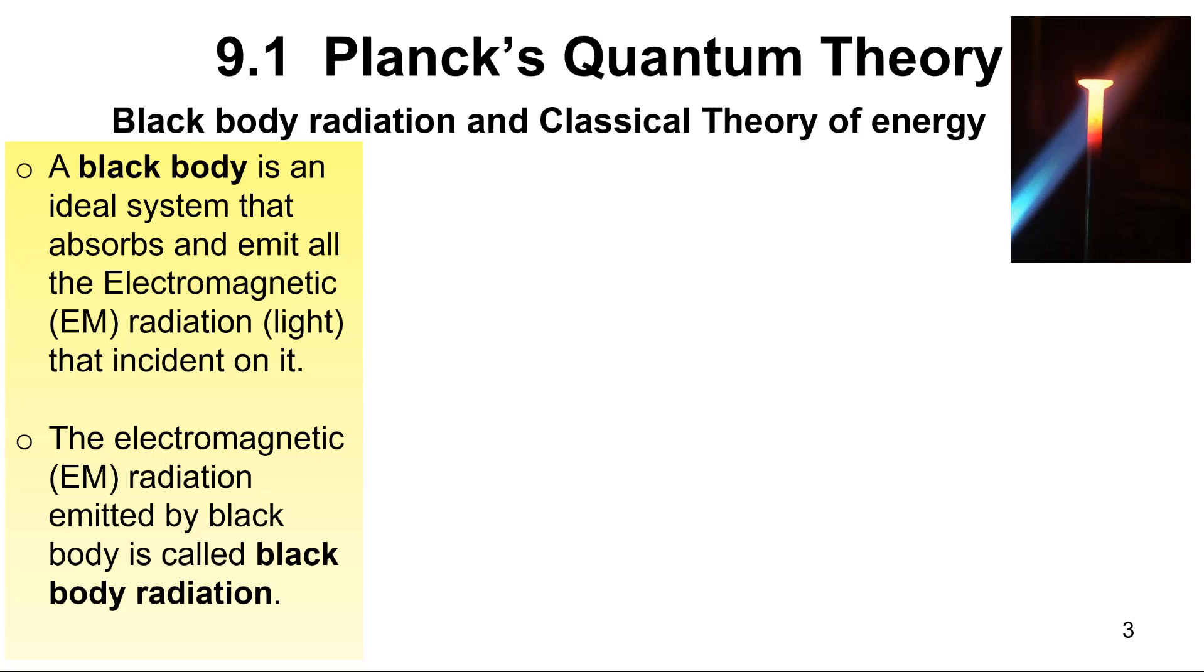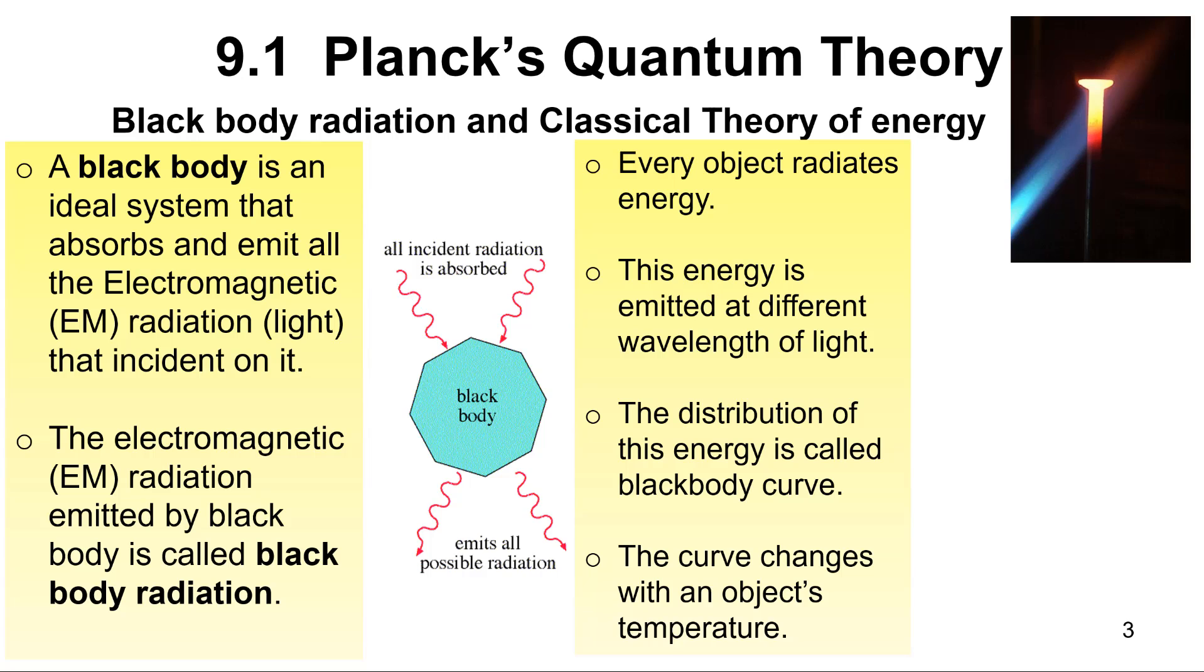Blackbody absorbs and emits electromagnetic radiation that's shown on it. The name of the electromagnetic radiation is called the blackbody radiation. The distribution of this energy is called blackbody curve and it depends on the temperature.